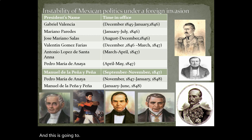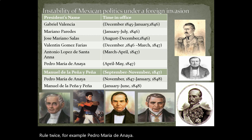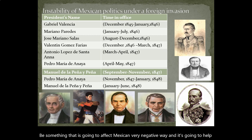Some of these presidents ruled twice. For example, Pedro María de Anaya, and Antonio López de Santa Anna was on and off. This is going to affect Mexico in a very negative way and it's going to help the United States achieve victory in this conflict.